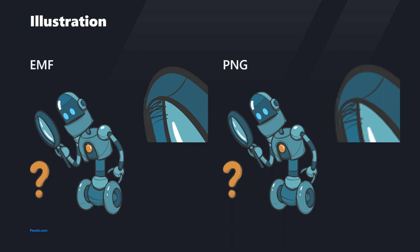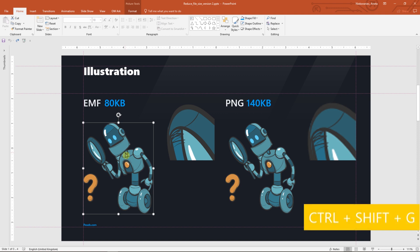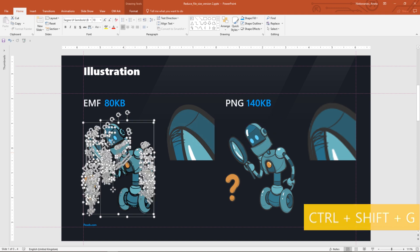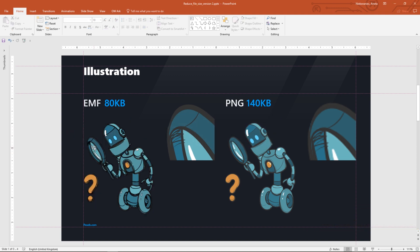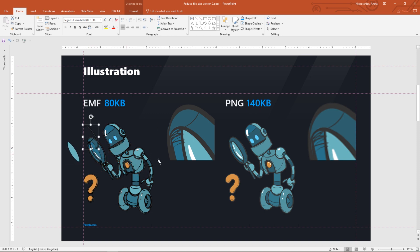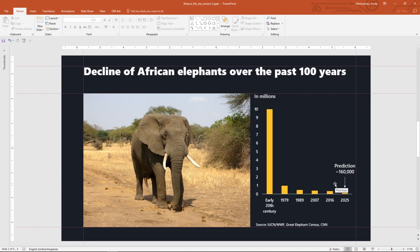But why is the EMF also lighter? Let's ungroup it — press Shift-Ctrl-G twice. And here you have the answer: it's made of shapes and lines. You cannot ungroup the PNG because it's a bitmap image, and that's why, after enlarging it, you can see the pixels. Besides, the larger the bitmap, the heavier it is.